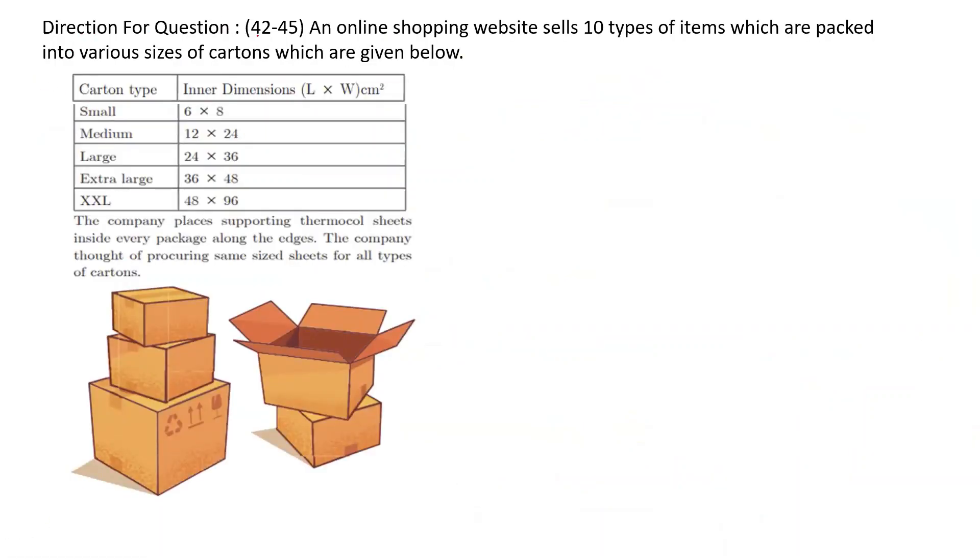Next question. An online shopping website sells 10 types of items which are packed into various sizes of cartons. Carton type and dimensions are given: Small size 6 cm by 8 cm, Medium 12 by 24, Large 24 by 36, Extra Large 36 by 48, Double XL 48 by 96. The company places supporting thermocol sheets inside every package along the edges. The company thought of using same size sheets for all types of cartons.